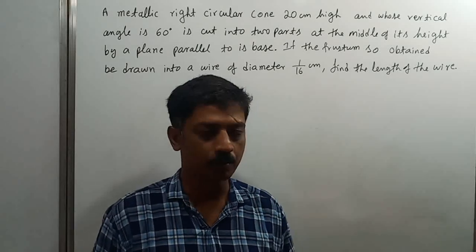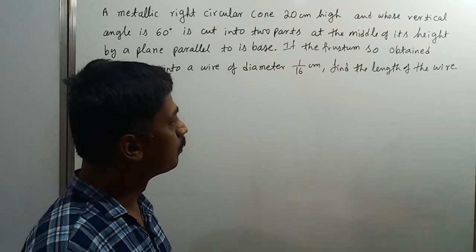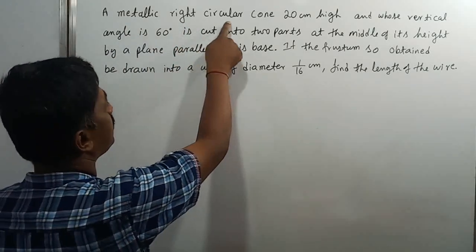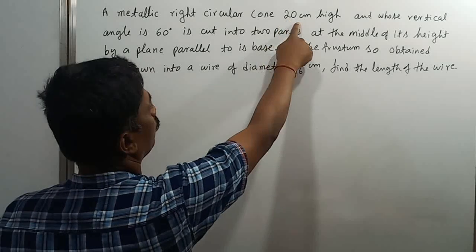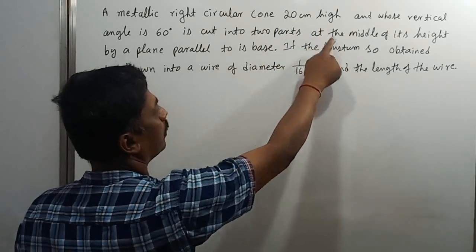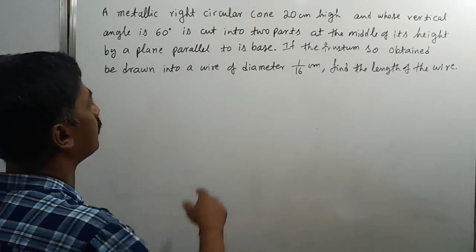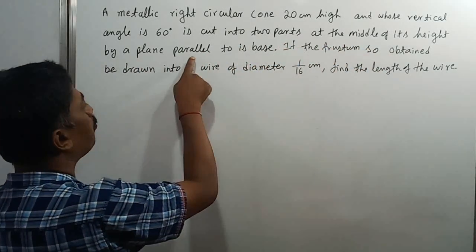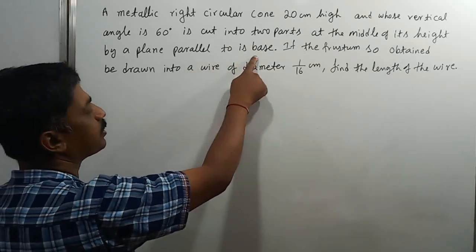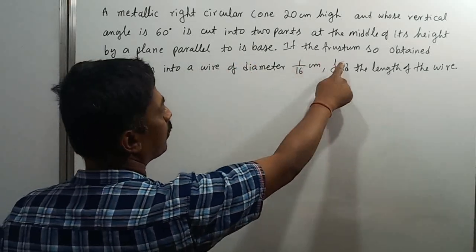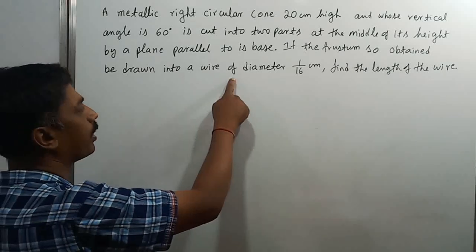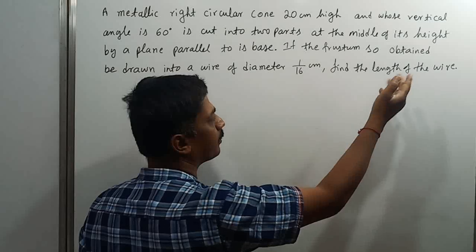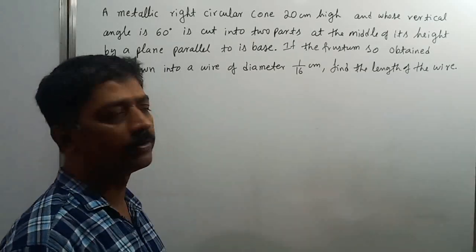Hello everyone. This question is from Sinchana. A metallic red circular cone of 20 cm high and whose vertical angle is 60 degrees is cut into two parts at the middle of its height by a plane parallel to its base. If the frustum so obtained be drawn into a wire of diameter 1/16th part of a centimeter, then find the length of the wire.